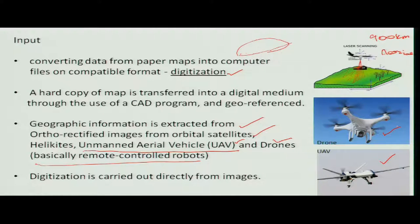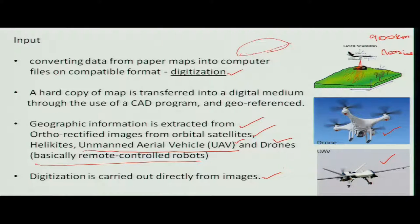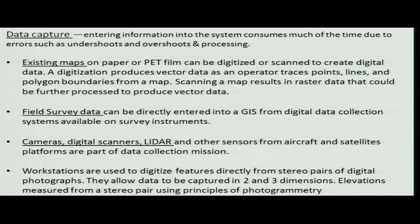With drones, you can have a closer look at surfaces, operated from the ground, and able to adjust height as well as vision properties. Another technology is laser scanning — LIDAR can also be used. Digitization is carried out directly from the images so there is no need to first trace out patterns and convert them again. Data can be captured in the form of paper, PET films, or as laser data.